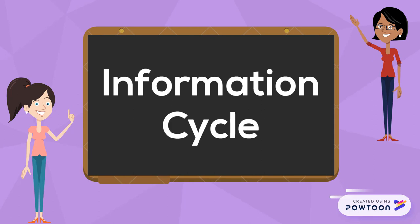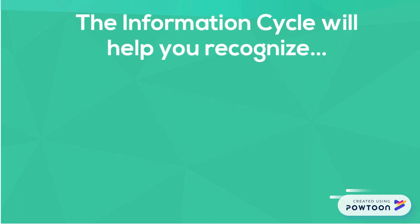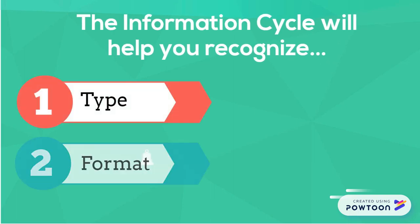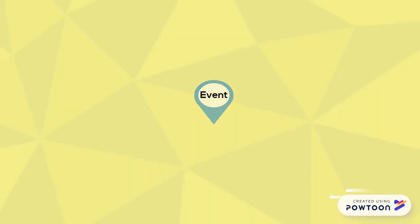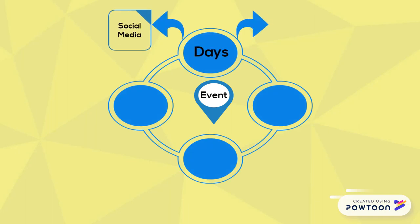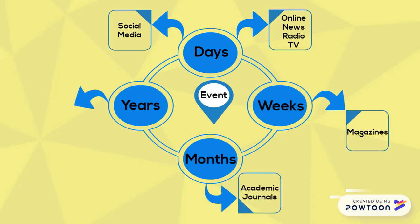By understanding the information cycle, Maria and you both will be better able to recognize what type of information is available on a topic, when, and in what format. According to the University of Illinois, the information cycle is the progression of media coverage of a particular newsworthy event. This means that information becomes available in different formats in the days, weeks, months, and years following an event.